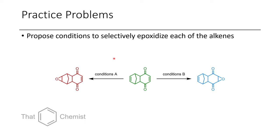In this first problem, we take this one compound and treat it with two different sets of conditions to get the epoxide on the left, as well as the epoxide on the right. I wanted you to propose conditions that would selectively give us either one or the other. In the first case, we could use MCPBA, which is an electrophilic oxidizing agent, so we'll form an epoxide on the more electron-rich alkene on the left.